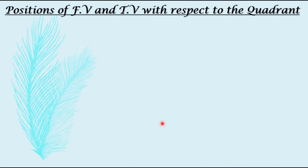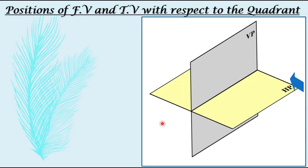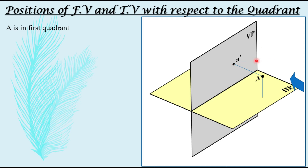Now, the most important point after identifying the quadrant is to remember the front view and top view positions with respect to the quadrant given. Every quadrant will have different locations for where the front view and top view must be drawn. In this four-quadrant system, with the observer looking from this side, point A is placed in the first quadrant. Looking from this side, you will have a projection — the front view A' — obtained on the vertical plane. Looking from the top, there will be a projection on the horizontal plane: the top view A.